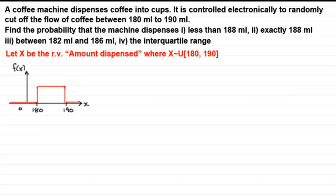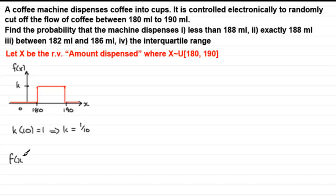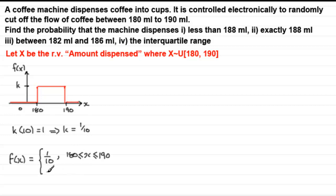Now we've got to work out this constant value — let's call it k. We know the area under the graph must equal 1, so k multiplied by the width, which is 10 units, must equal 1. Therefore k equals one-tenth. So the probability density function f(x) equals one-tenth for values of x between 180 and 190 millilitres, and zero otherwise.